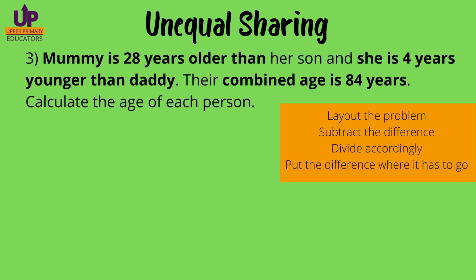As usual, we underline important words and details — I have written them in bold, but you will underline — and we look at our process. Let's lay out the problem. In this instance we have three persons: mom, dad, and the son. So I put three empty boxes. Next, we must subtract the difference. Remember, the difference is the extra portion, the extra amount, the extra number of years.